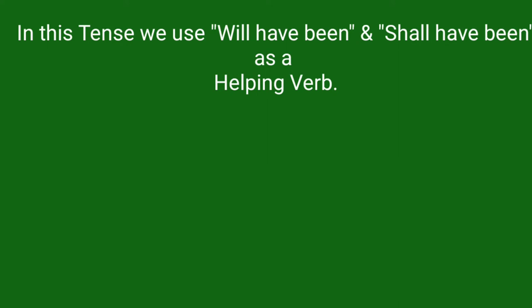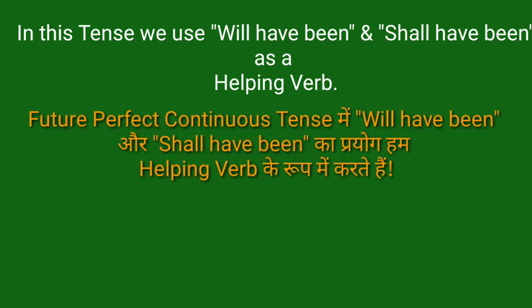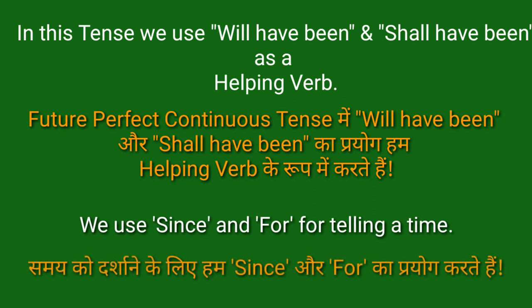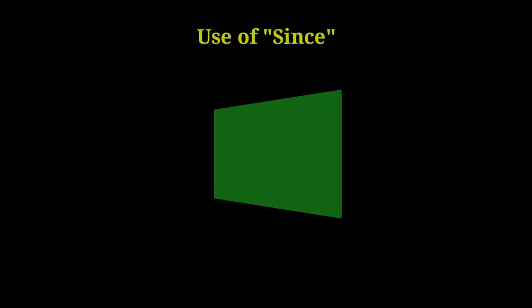In this tense, we use 'will have been' and 'shall have been' as a helping verb. Future perfect continuous tense में will have been और shall have been का प्रयोग हम helping verb के रूप में करते हैं। We use 'since' and 'for' for telling a time. समय को दर्शाने के लिए हम since और for का प्रयोग करते हैं।